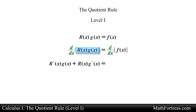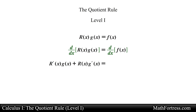Applying the product rule we obtain the following expression. Next we take the derivative of the right hand side of the equation — in this case the derivative of f is going to be equal to f prime. Having taken the derivative of both sides, we now need to solve for r prime.